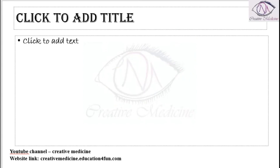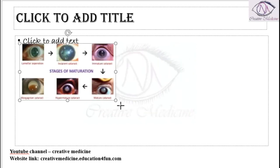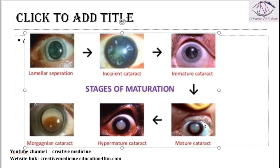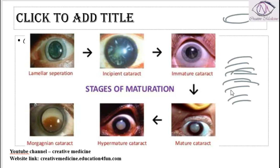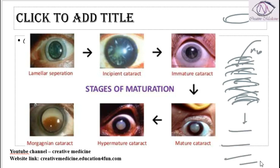In the stages of maturation of the cataract, first and foremost, there is lamellar separation. Lamellar separation occurs because in the lens there are collagen fibers. Whenever water enters between the lamella of these collagen fibers, water gets deposited and lamellar separation occurs in the lens.